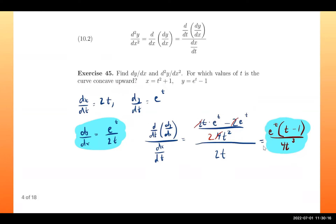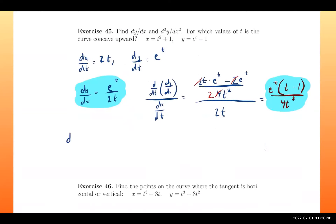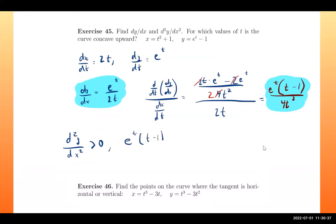Now the final part: determine where the curve is concave upward. For that, we need to find where the second derivative is positive. We need to determine when e^t(t−1)/(4t³) is greater than or equal to zero. We find the zeros — there's a zero at t=1 — and graph a number line.